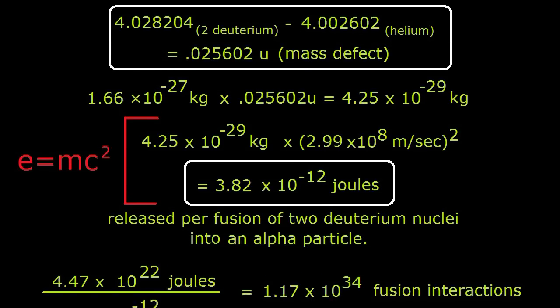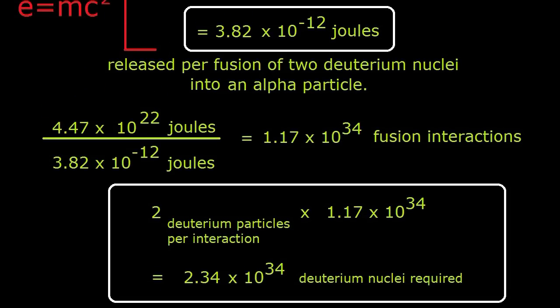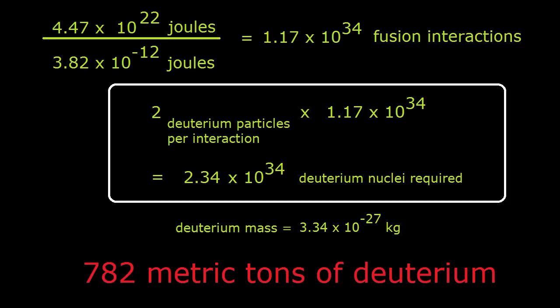So dividing that into the total energy needed requires that we fuse minimally, before we even touch Tsiolkovsky's rocket equation, 2.34 times 10 to the 34th deuterium nuclei, which in turn is about 782 metric tons of deuterium.